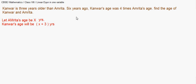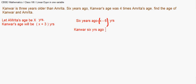Six years ago, Amrita's age was x minus 6. Conver's present age is x plus 3, so 6 years ago Conver's age was x plus 3 minus 6, which simplifies to x minus 3. The problem states Conver's age 6 years ago was 4 times Amrita's age at that time.